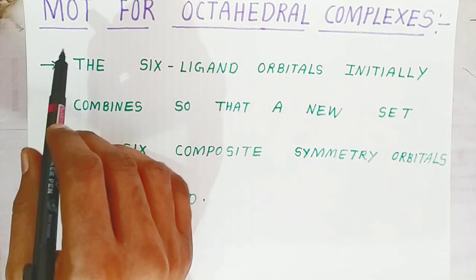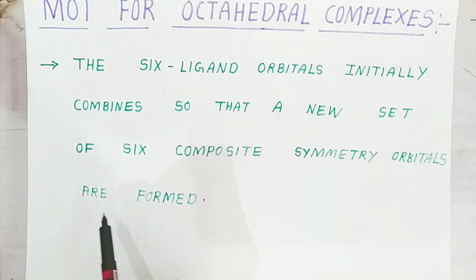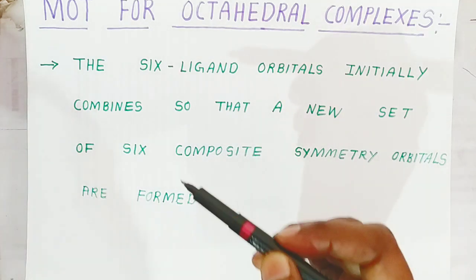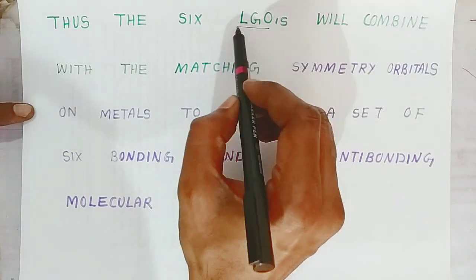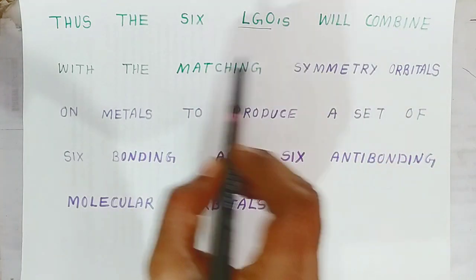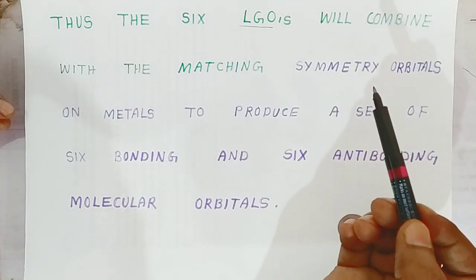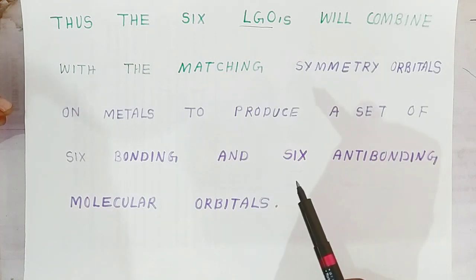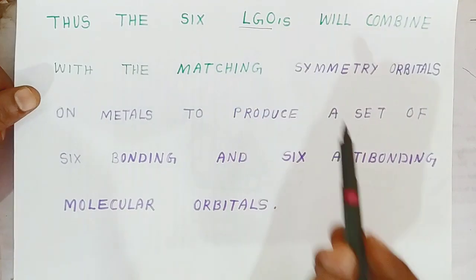First, MOT theory is going to be applied to octahedral complexes. In octahedral complexes, the six ligand orbitals initially combine so that a new set of six composite symmetry orbitals are formed. Six ligand orbitals combine with six atomic orbitals of the metal to form bonding and anti-bonding molecular orbitals. These are called Ligand Group Orbitals, or LGOs, classified by symmetry, and they combine with matching symmetry orbitals on the metal.